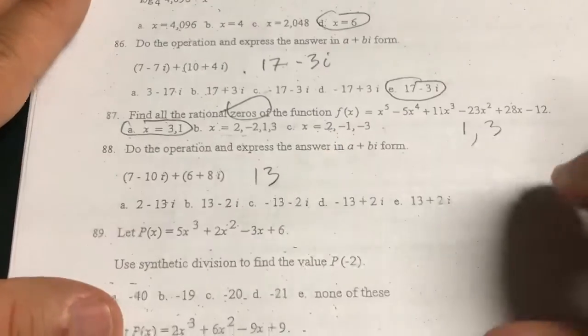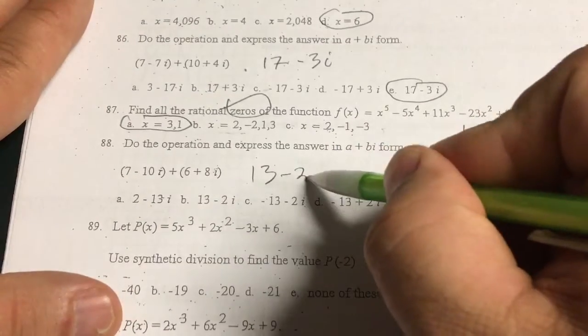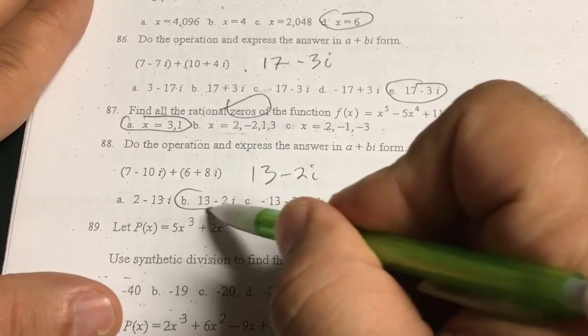Again, no calculator needed. 7 plus 6 is 13. Negative 10 plus 8 is minus 2i. Choice B this time.